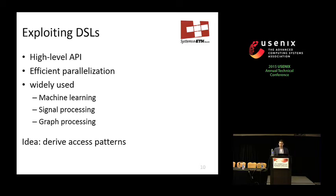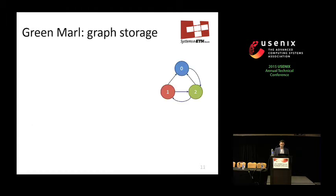The example I'll show is GreenMile, a well-established graph processing language. It stores graphs internally as arrays, which is exactly what we are working with. To understand the rest of the talk, it's important to understand how exactly the graph is stored as an array — the technique is called an adjacency array.